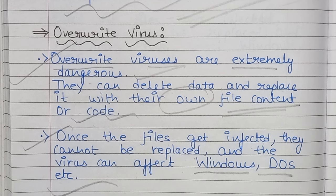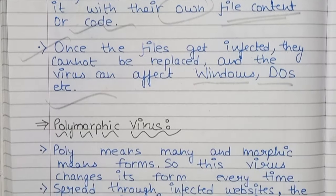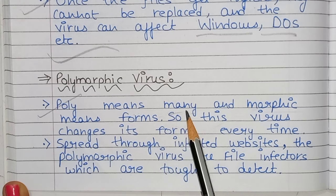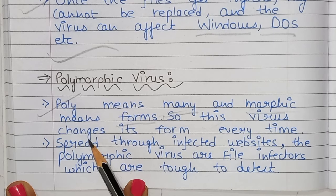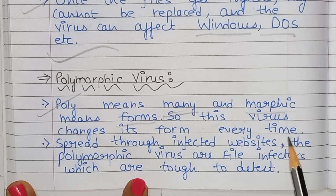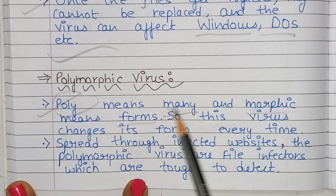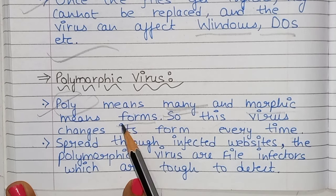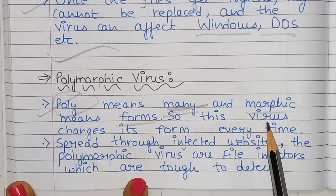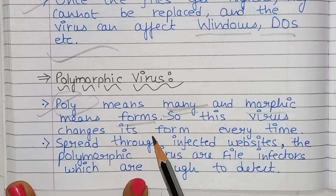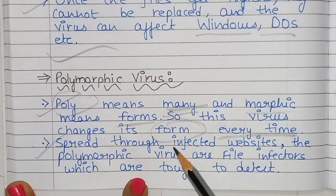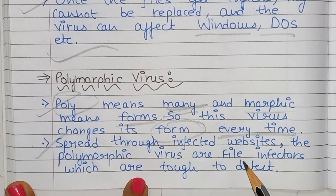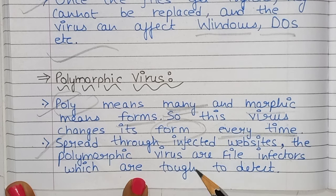Next is polymorphic virus. Poly means many and morphic means forms, so this virus changes its form every time it spreads. It spreads through infected websites. Polymorphic viruses are file infectors which are tough to detect.